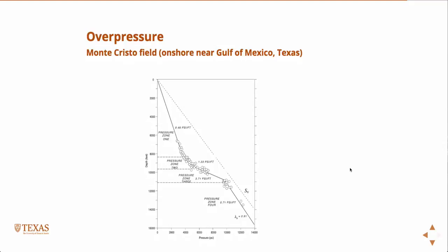This is an actual plot of depth as a function of pressure — actual data from the Gulf of Mexico, and this is pretty typical. You'll see an initial hydrostatic region, then an over-pressurized region going down, and then what approaches something that's almost lithostatic. It's not quite — but the ratio between the pore pressure and the vertical stress is almost 0.91. If it were perfectly lithostatic, the slope of that line would be identical to the vertical stress, but it's not quite the case.